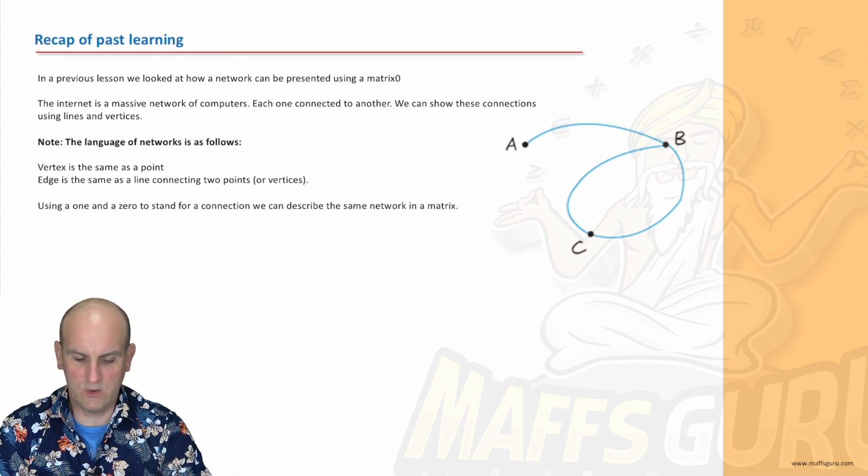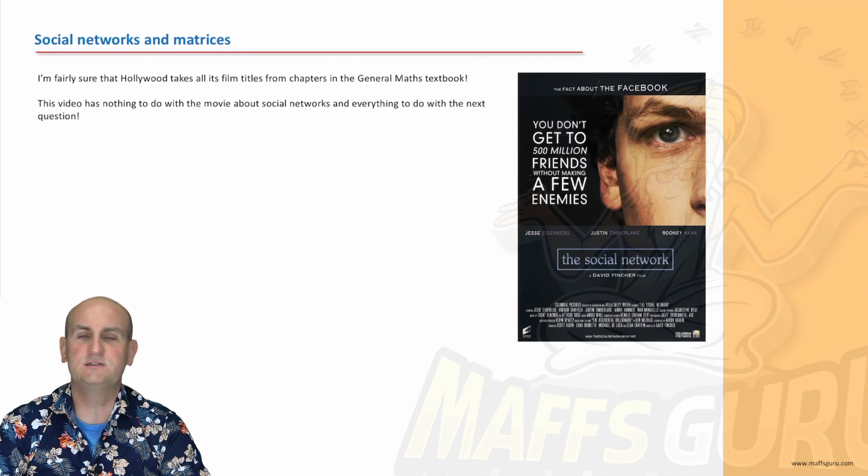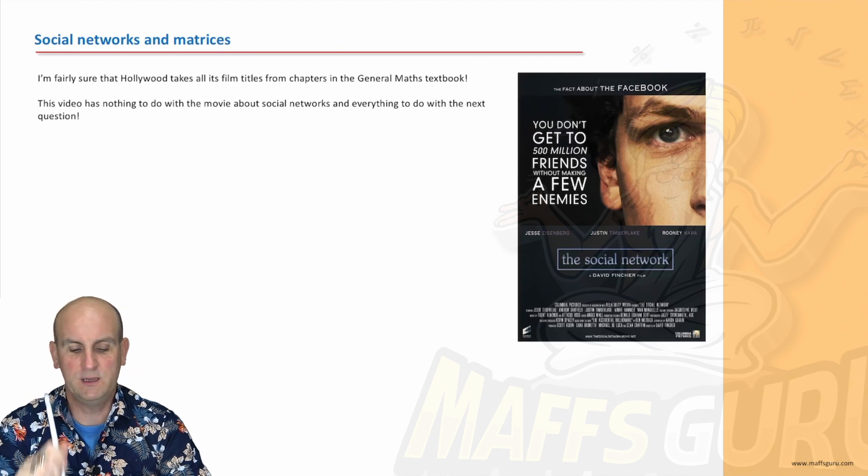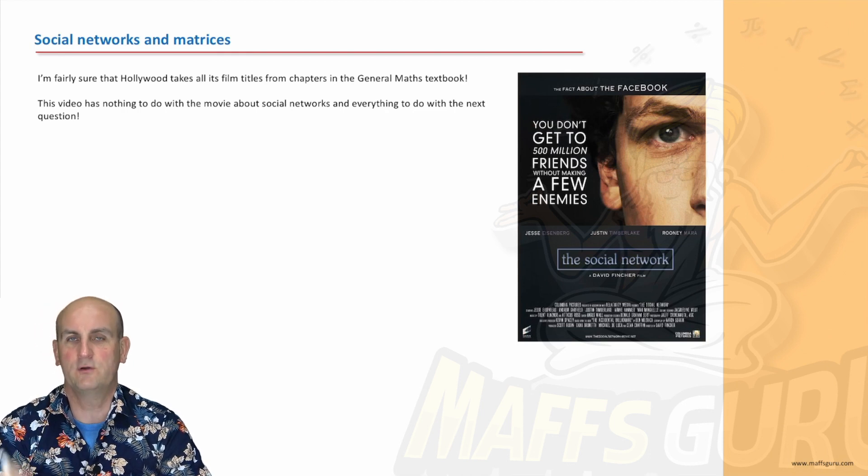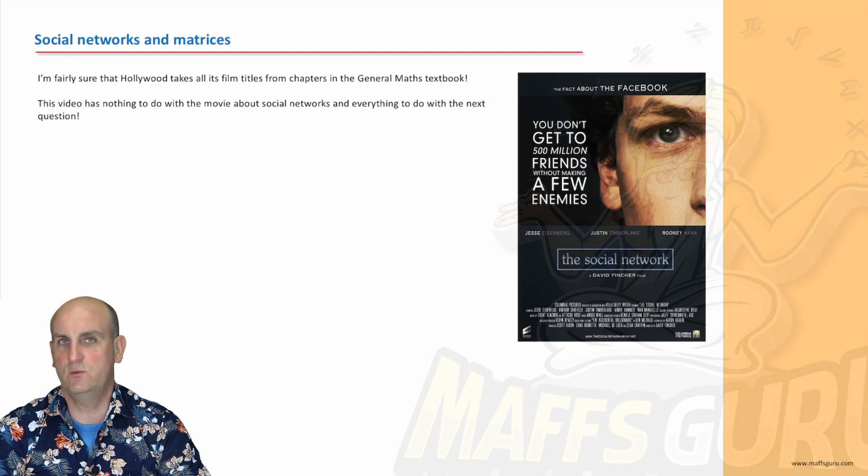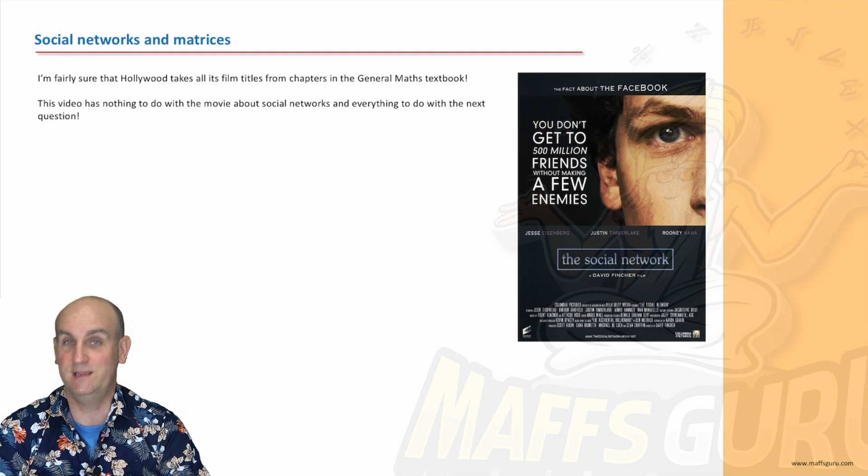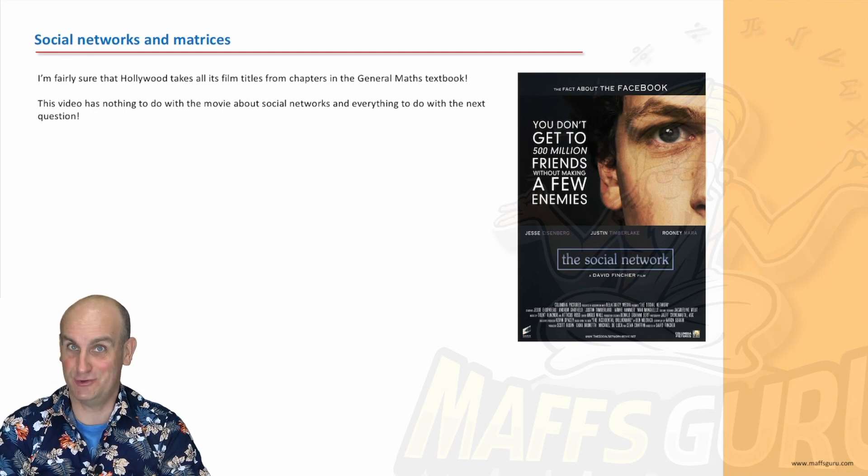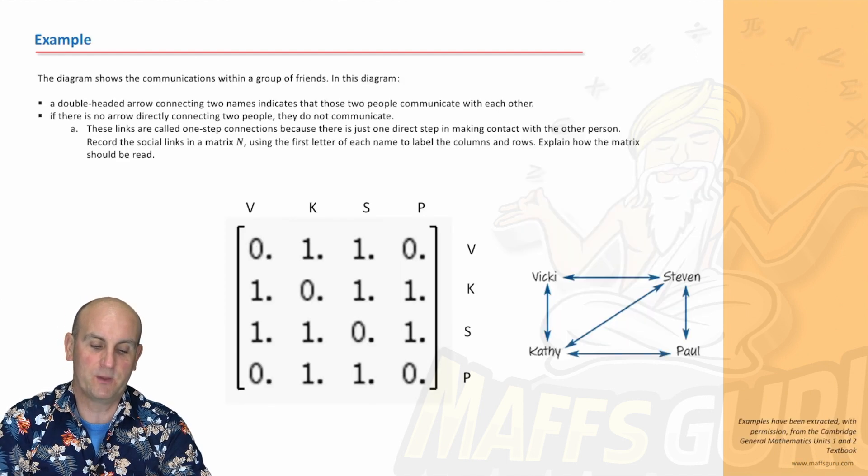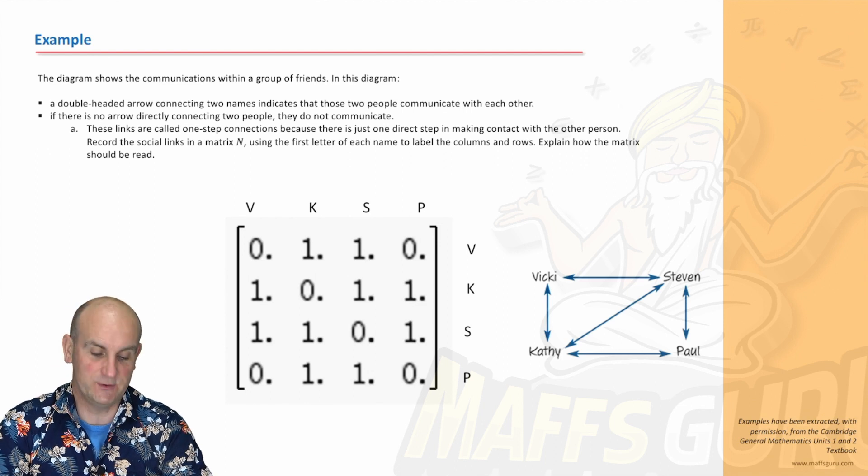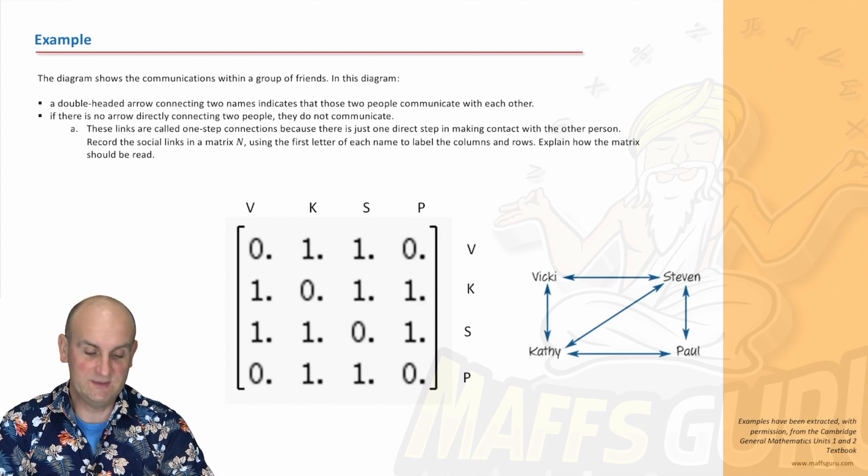So we have vertices and edges rather than points and lines. Generally speaking, we use a 1 for when there is a connection and a 0 when there is no connection. With this general maths course, pretty much all the content has some sort of Hollywood movie theme. Matrix. Social networks. See what I mean?